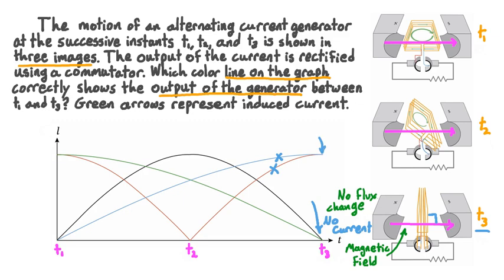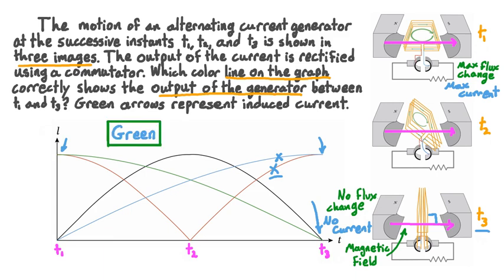Since we've already looked at when the loop is perpendicular to the magnetic field, let's now look at when the loop is parallel to the magnetic field, which occurs at T1. When the loop is parallel to the magnetic field, the orientation relative to the magnetic field is changing, so the change in flux is actually maximized, and so is the current. We're looking for the line that shows a maximum current at T1. Our choices are either the green line or the red line, but we've already rejected the red line since it isn't zero at T3. Therefore, the only line that shows a maximum current at T1 and a zero current at T3 — the only correct answer — is the green line.